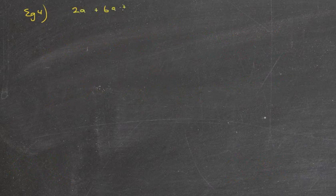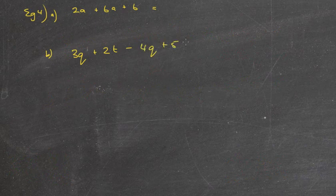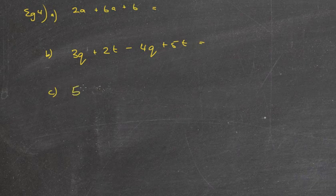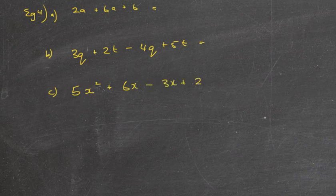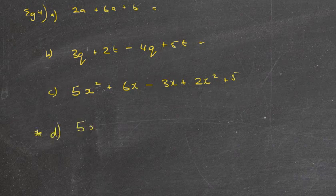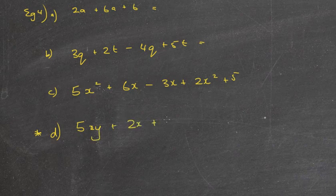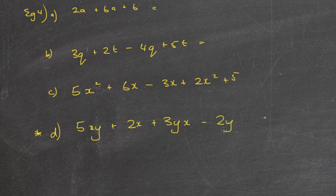I'm now going to give you just a couple of questions to do on your own. So, EG4. We're going to have 2A plus 6A plus 6 plus AB. We'll have 3Q plus 2T minus 4Q plus 5T. C, I'll give you 5X squared plus 6X minus 3X plus 2X squared plus 5. And the last one which will be most challenging will be 5XY plus 2X plus 3YX minus 2Y. What I want you to do folks, I want you to pause this now, have a crack at the questions and then press play and I'll go through the answers.